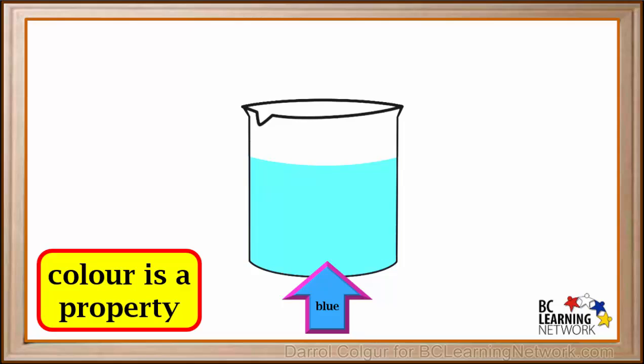For example, color is a property. Here we have a solution that is blue, and here is one that's yellow, and here is one that's pink.